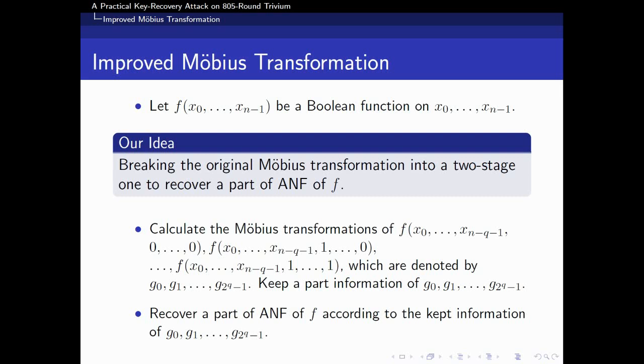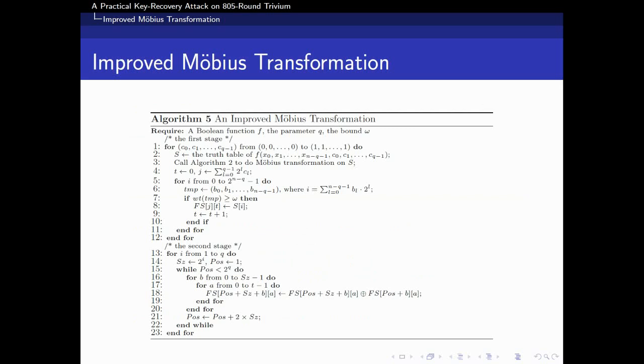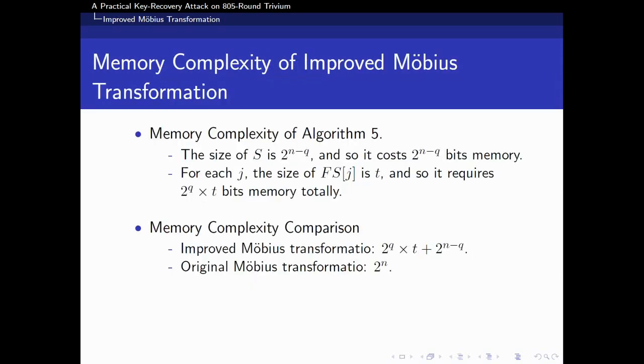In the first stage, we calculate g_0, g_1, to g_{2^q - 1} and keep a part of their information. In the second stage, we recover ANF of f according to the captured information. Algorithm 5 shows the details of our improved Möbius transformation. The memory complexity of Algorithm 5 consists of two parts. First, the size of S is 2^{n-q}, and so it costs 2^{n-q} bit memory. Second, for each h, the size of S is t, and so it requires 2^q times t bit memory totally. When t is much less than 2^{n-q}, the memory complexity of our improved Möbius transformation is much less than that of the original Möbius transformation.